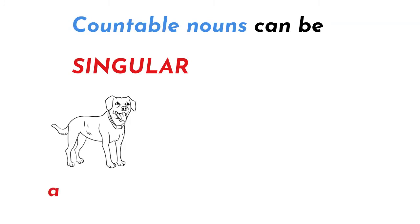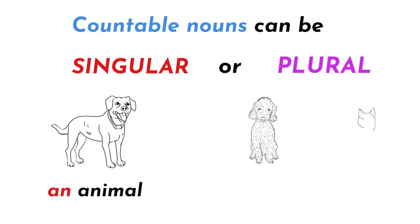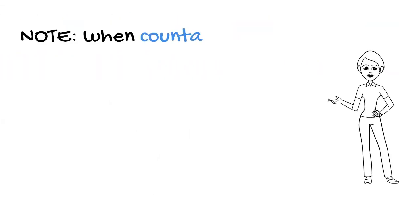Countable nouns can be singular, an animal, or plural, the animals. Note,